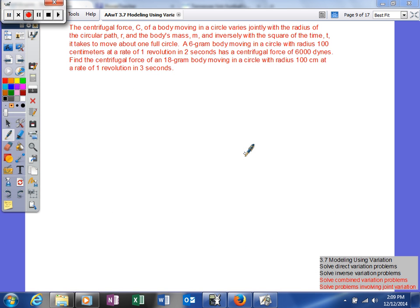Alright, this example is going to be an example of both combined variation problems and also problems involving joint variation. As you can see, we have multiple things going on here. It says that centrifugal force C of a body in motion in a circle varies jointly with the radius of the circular path R and the body's mass M,